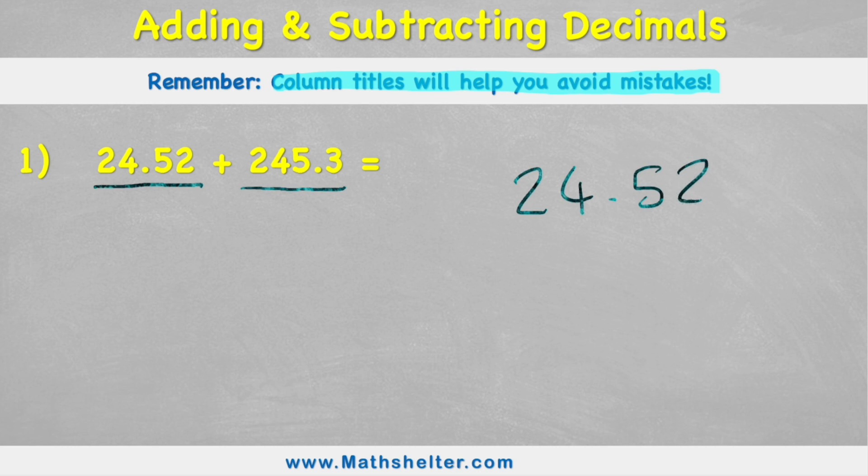Well, is that right? No, because look, we can see our decimals are not in line. Therefore my ones - I have four ones here and five ones here - are also not in line, so I'm adding the wrong numbers together. So I can avoid this small mistake by putting my column titles in.